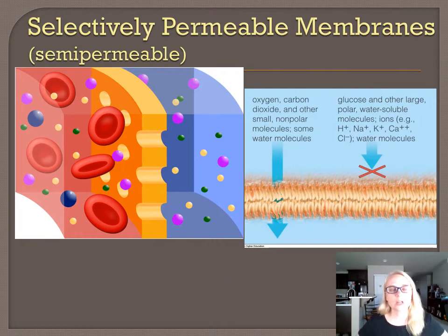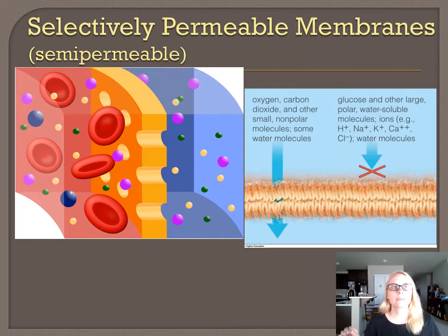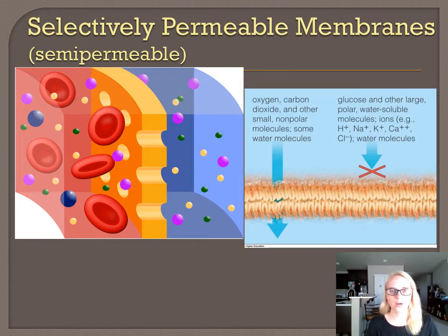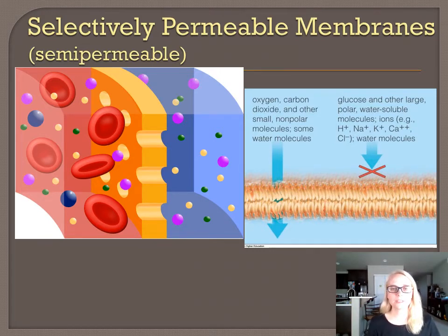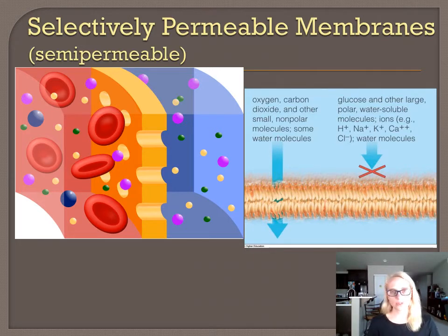These two transport lectures cover passive transport and active transport. The words active and passive are directly related to whether the cell uses energy to transport substances across its membrane. If it does not use energy — not burning ATP or any other cellular energy — it's called passive transport. If the cell does use cellular energy, usually in the form of ATP, to move something across a membrane, that's active transport. This module covers passive, no-energy-needed transport.